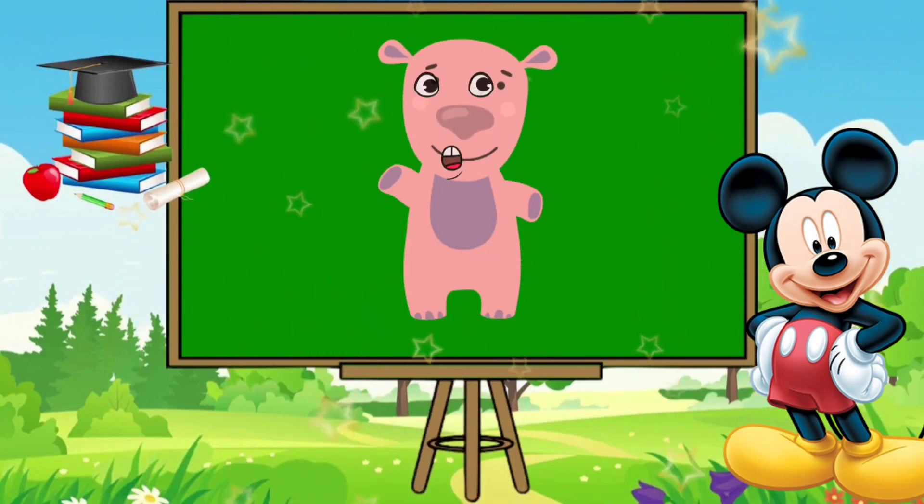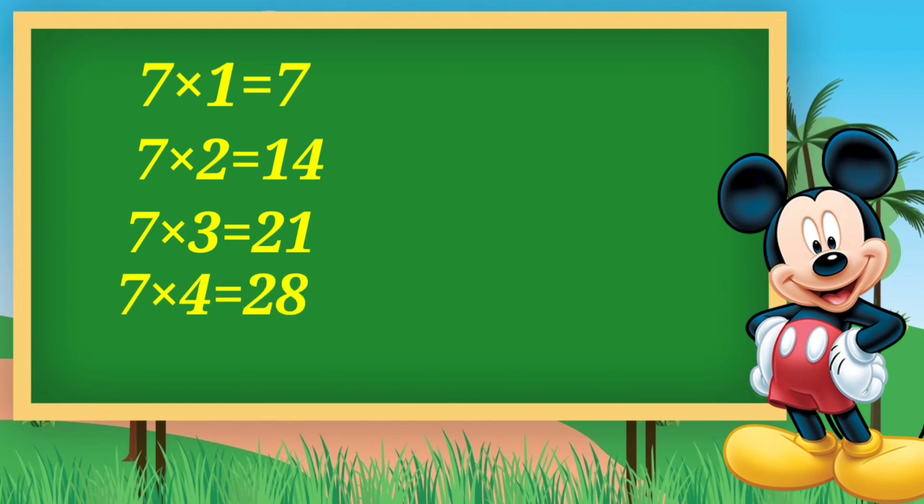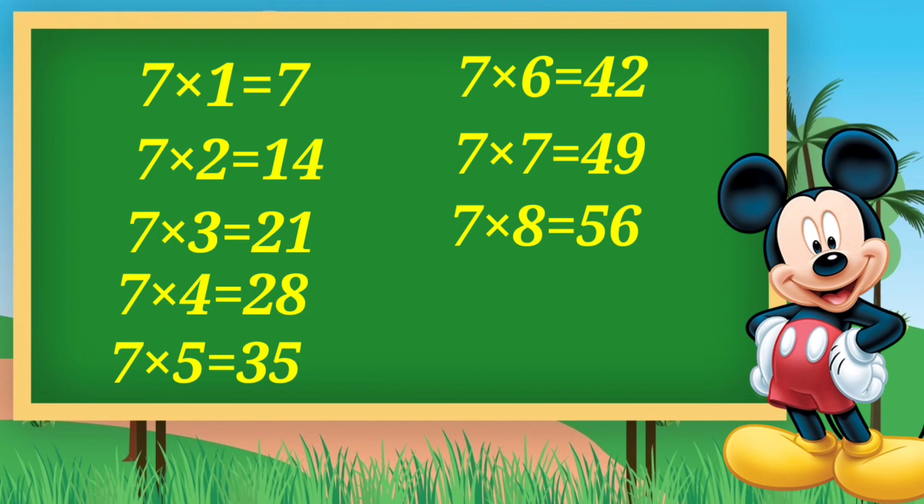Let's repeat children. 7×1=7, 7×2=14, 7×4=28, 7×5=35, 7×6=42, 7×7=49, 7×8=56, 7×9=63, 7×10=70